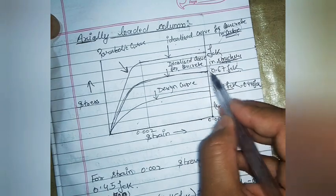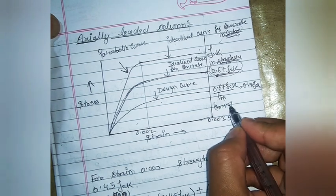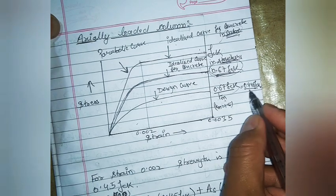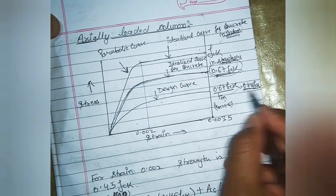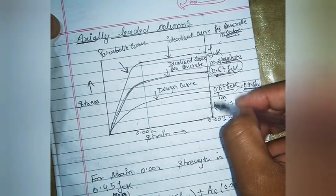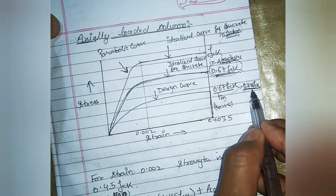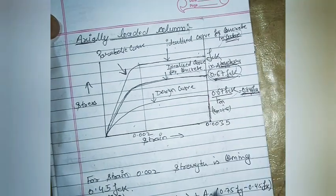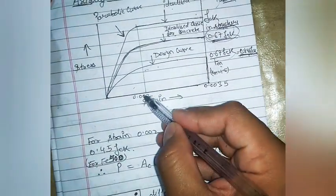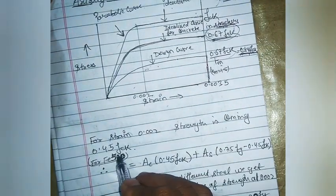The design curve is obtained by dividing the structural value by the safety factor gamma_m = 1.5, giving 0.45fck as the design strength. At the extreme compression fiber at failure strain, the maximum design stress is 0.45fck. For strain 0.002, the strength comes out to be 0.45fck.